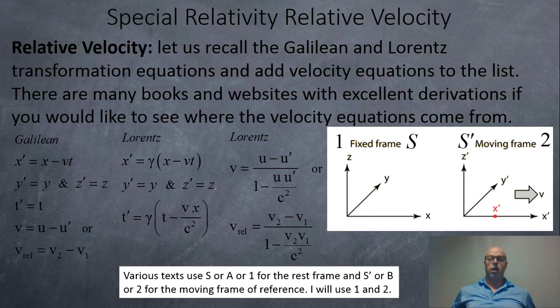Let us recall the Galilean and Lorentz transformation equations first, and we'll also add in the velocity transformations. Here we have our reference frame A, or in this case 1, or S. Reference frame B, or S prime, or 2, the moving frame. In the Galilean, your X location in the moving frame is X in the rest location, subtract the relative velocity times time. And your Ys and Zs are the same, and your T is the same.